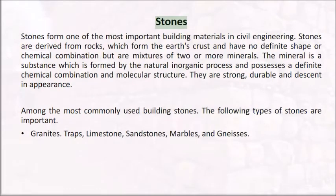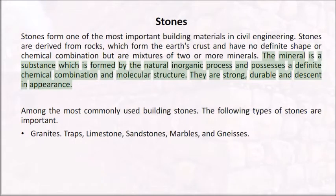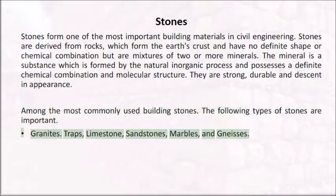Stones form one of the most important building materials in civil engineering. Stones are derived from rocks which form the earth's crust and have no definite shape or chemical combination but are mixtures of two or more minerals. They are strong, durable, and decent in appearance. Among the most commonly used building stones, the following types are important: granites, traps, limestone, sandstones, marbles, and gneisses.